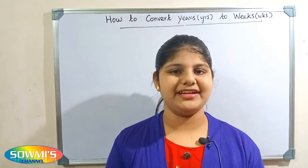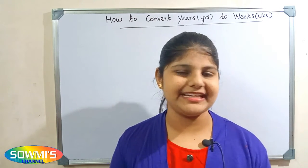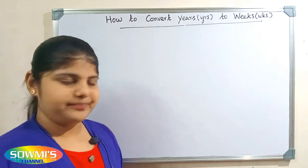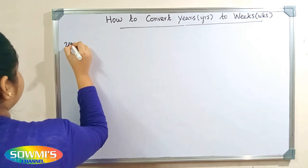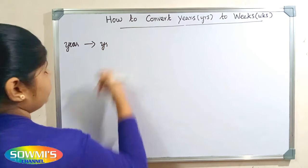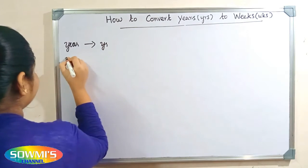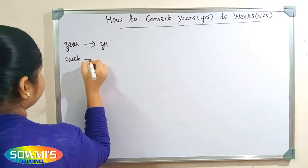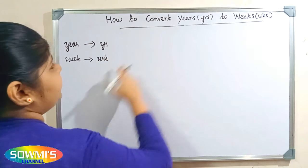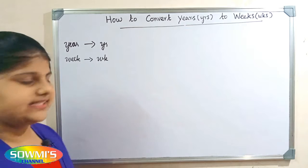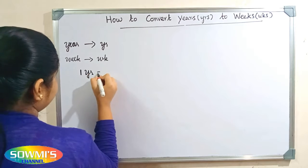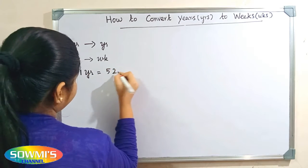Hi friends, welcome to my channel. In this video I am going to teach how to convert years into weeks. Years and weeks are units of time. The short form of year is yr, and the short form of week is wk. The formula for converting years into weeks is: one year is equal to 52 weeks.